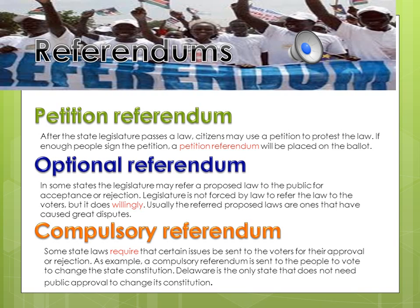The compulsory referendum is when some state laws require certain issues to be sent to voters for their approval or rejection. An example is changing the state constitution — being such a serious decision, most states require voters to choose or reject the change. Delaware is the only state that does not need public approval to change its constitution. Compulsory means mandated, forced, required — so legislators must ask voters.